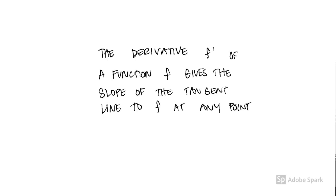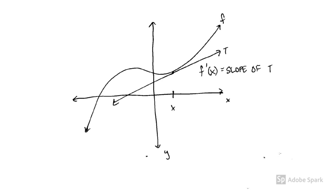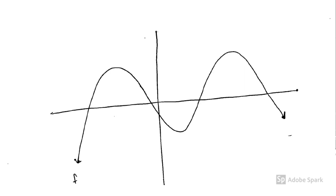The main idea of the class is that the derivative f' of a function f gives the slope of the tangent line to f at any point. Here's the graph of f and its tangent line at x. The derivative is the slope of that tangent line.